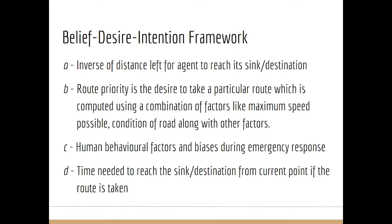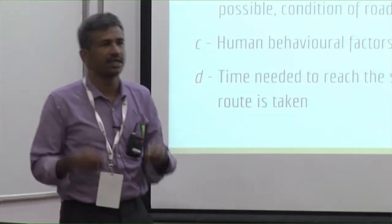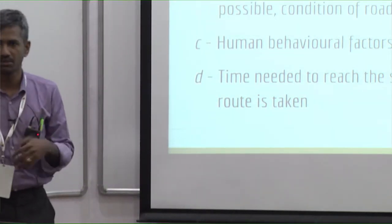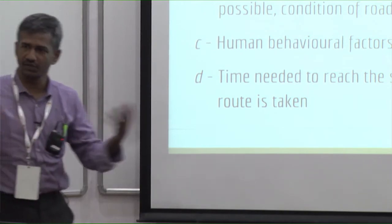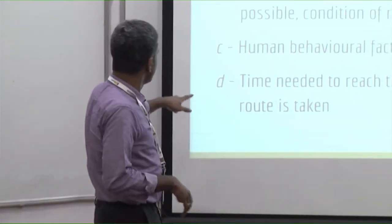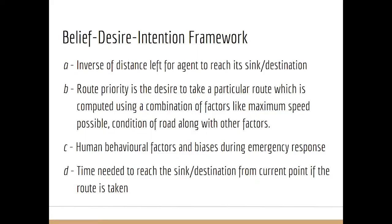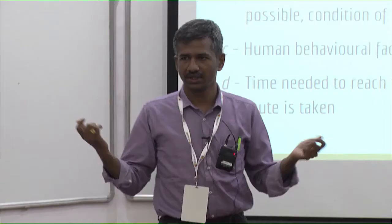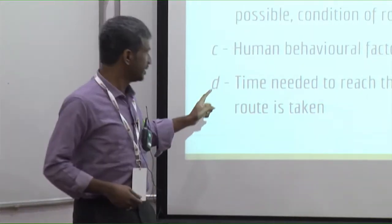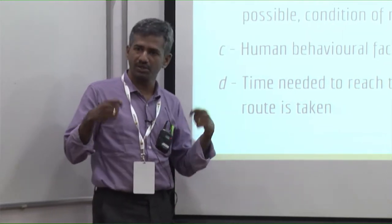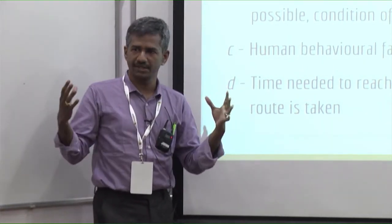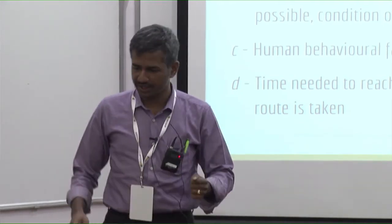To summarize the four factors: A uses static data, B uses personalized preferences, C captures reactive human behavior during emergencies — people reacting due to biases or fear rather than rational planning — and D models data from intelligent devices. We don't specify exactly what those devices are, but the factor is designed to incorporate any such real-time information.